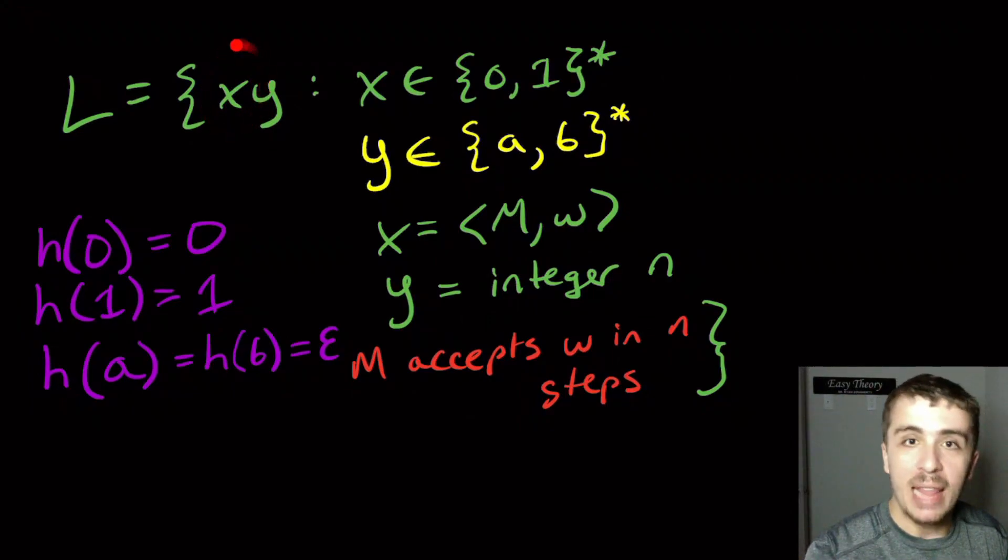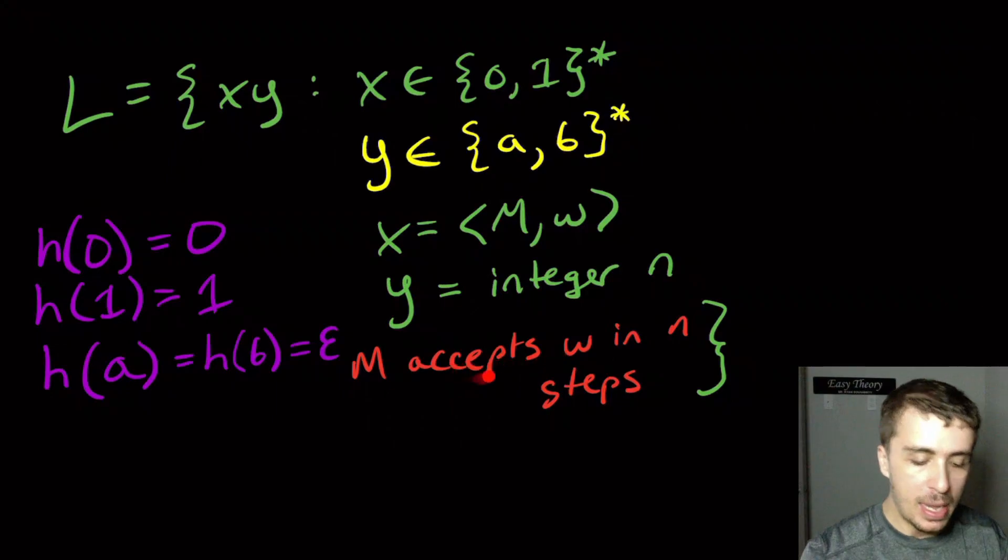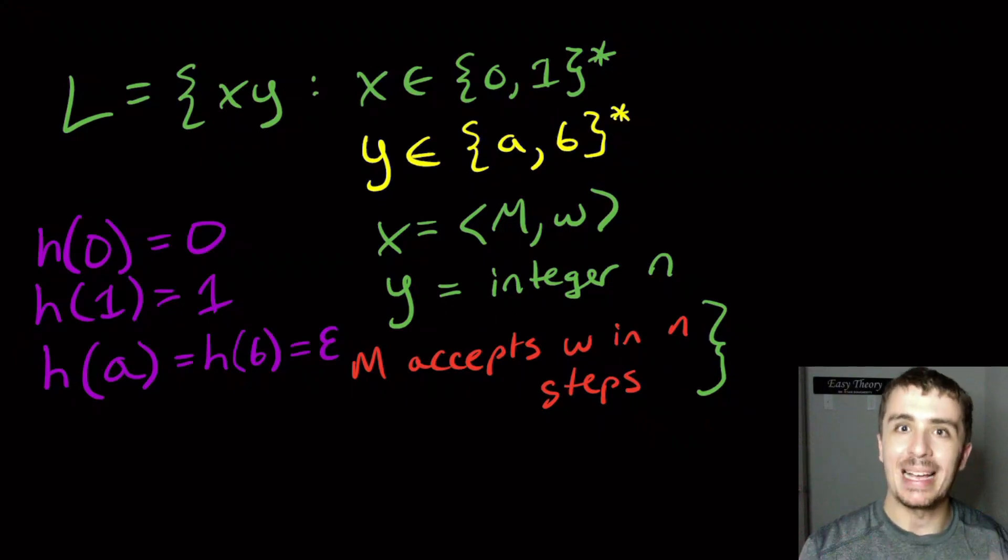And so therefore, the only thing that we have left is the x part, which is clearly encoding just a Turing machine and an input and m accepting w. But now we have no limit on how long the Turing machine runs. And we're back at the acceptance problem, which is clearly undecidable. So hopefully that was interesting.